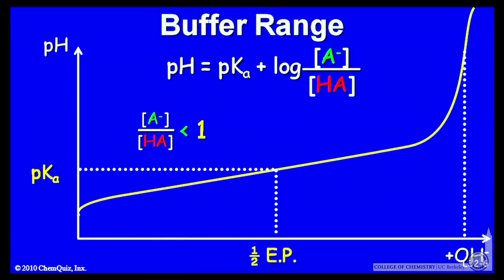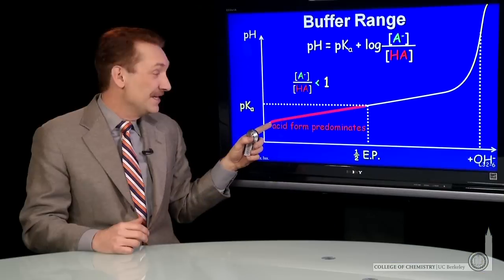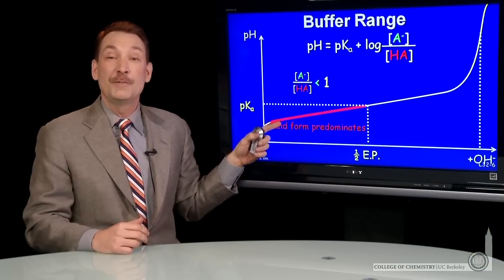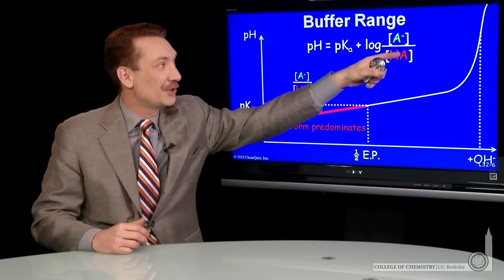Now, if the acid form is slightly higher concentration than the base form, this ratio is less than 1, the acid form predominates. That's in this region where the pH would be less than the pKa. This term would be negative.